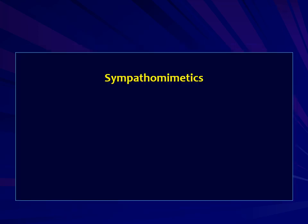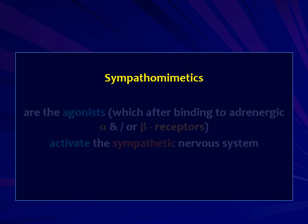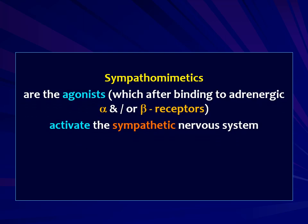Sympathomimetics — as the word shows, 'mimetic' means to mimic or resemble. These drugs are agonists; when given inside the body they bind to the respective adrenergic alpha and beta receptors, activate them, and accordingly produce effects which mimic and resemble natural sympathetic nervous system stimulation.